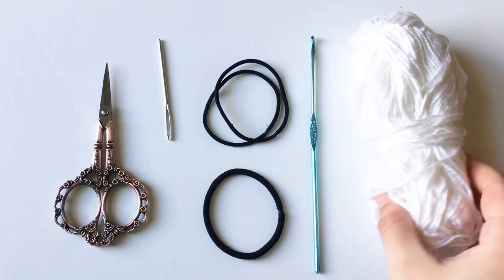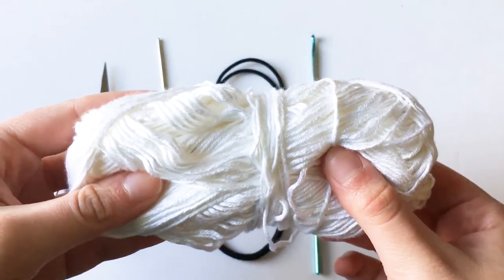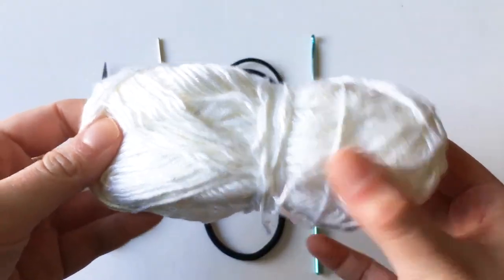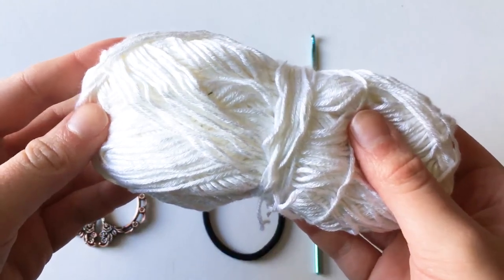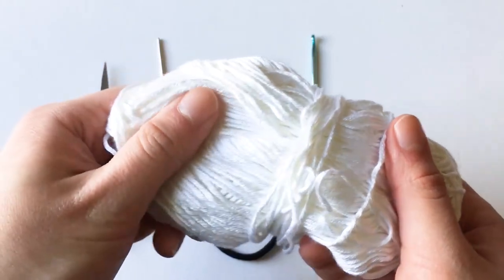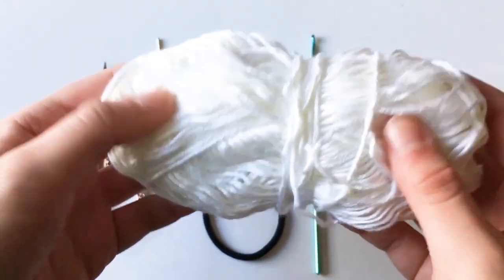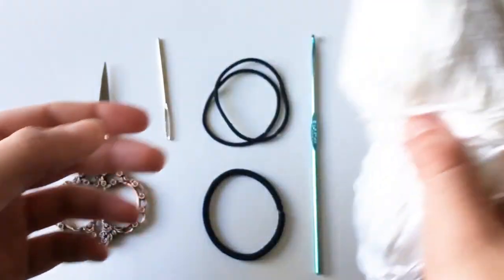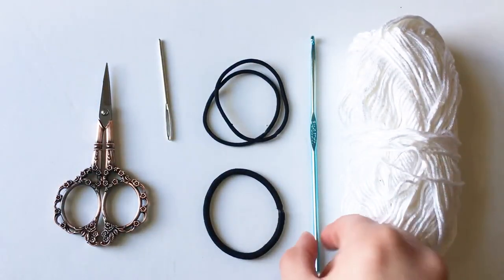You'll need about 80 yards of DK weight number three yarn and I used Lime brand True Goo. I highly recommend using this yarn for this project because it's really soft. When you're making scrunchies you want a really soft yarn so that it's not going to create any breakage in your hair.